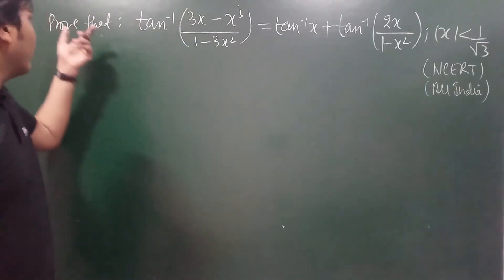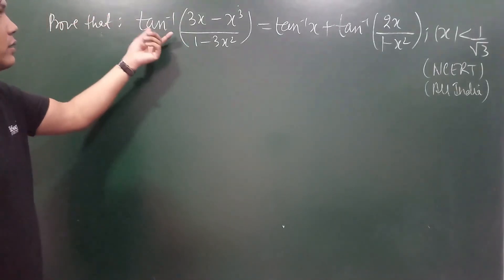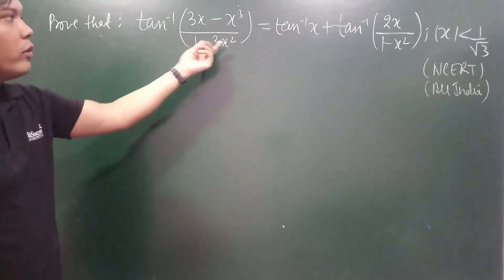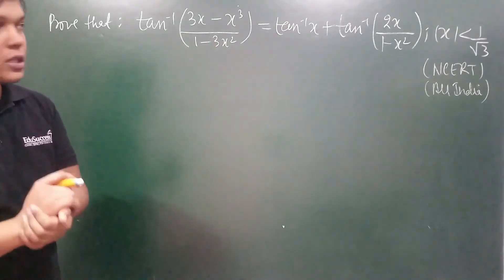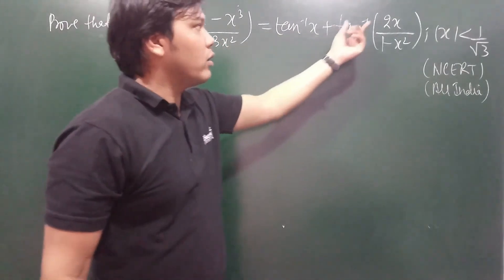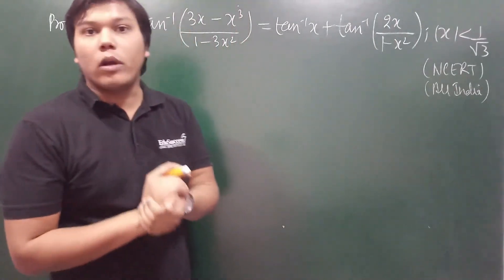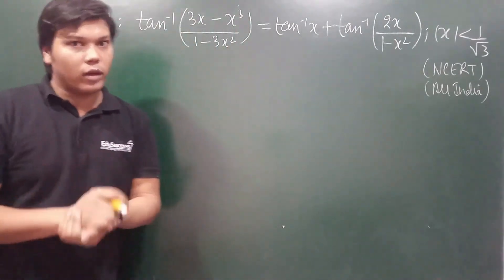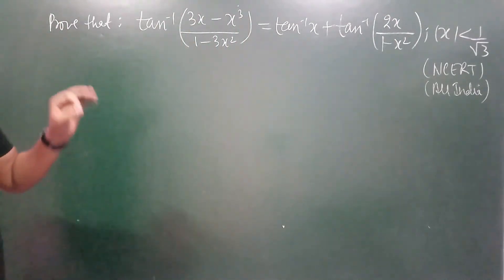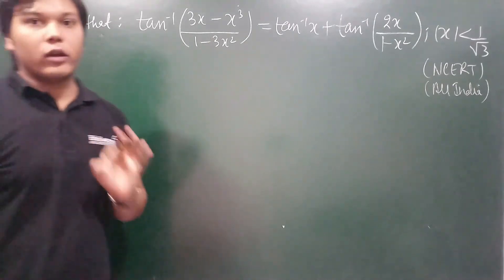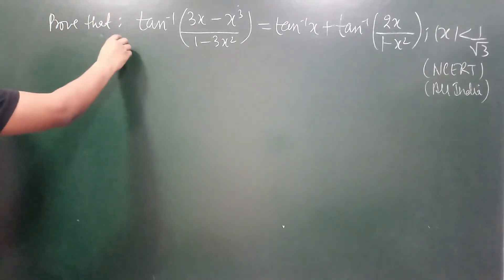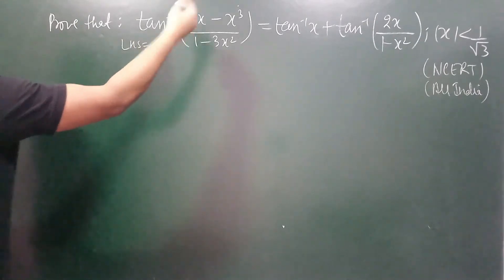Let's see our next question. We have to prove that tan inverse of (3x minus x cube) upon (1 minus 3x square) is equal to tan inverse x plus tan inverse (2x upon 1 minus x square). We can prove this question by the method of substitution. Let's consider LHS and RHS carefully.